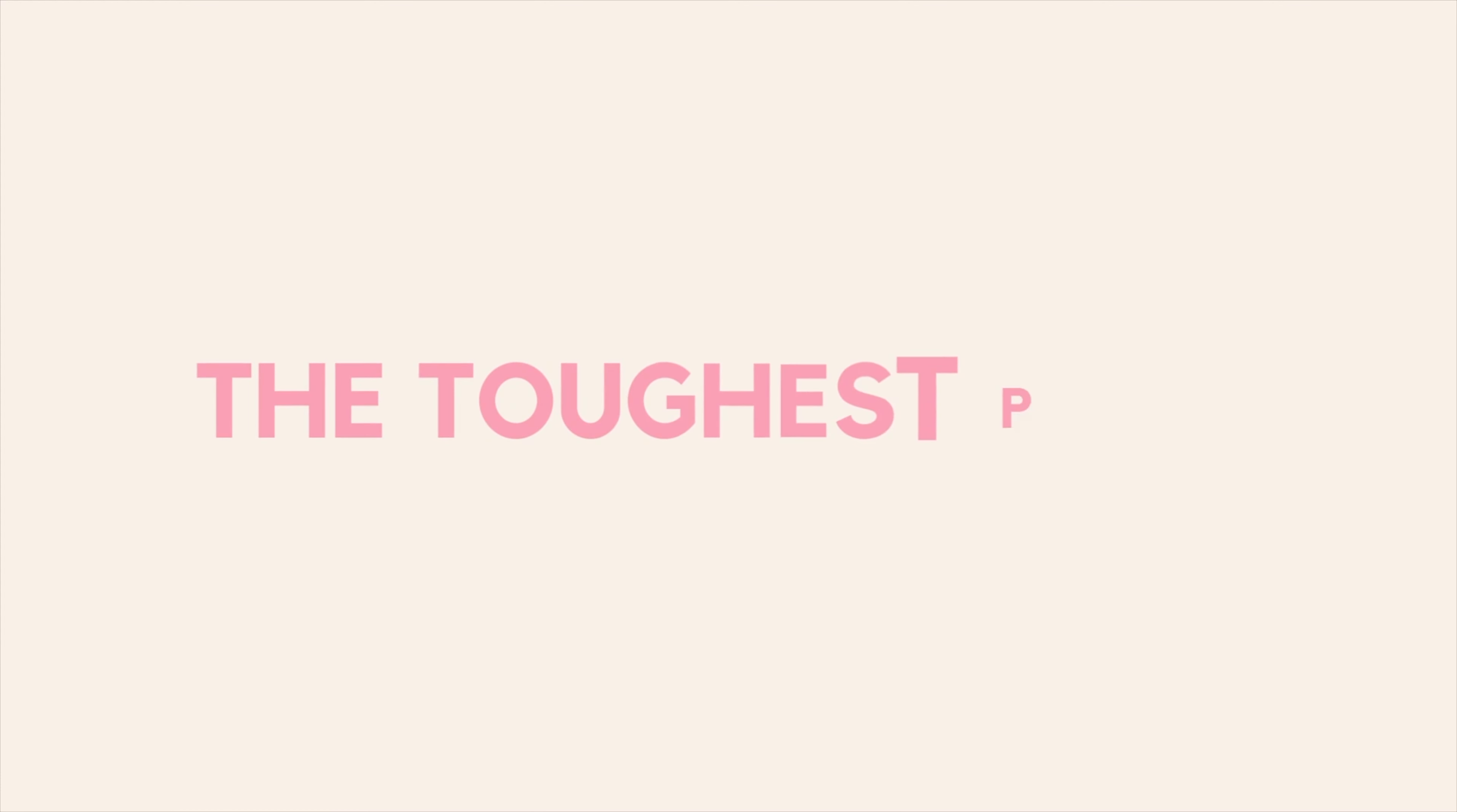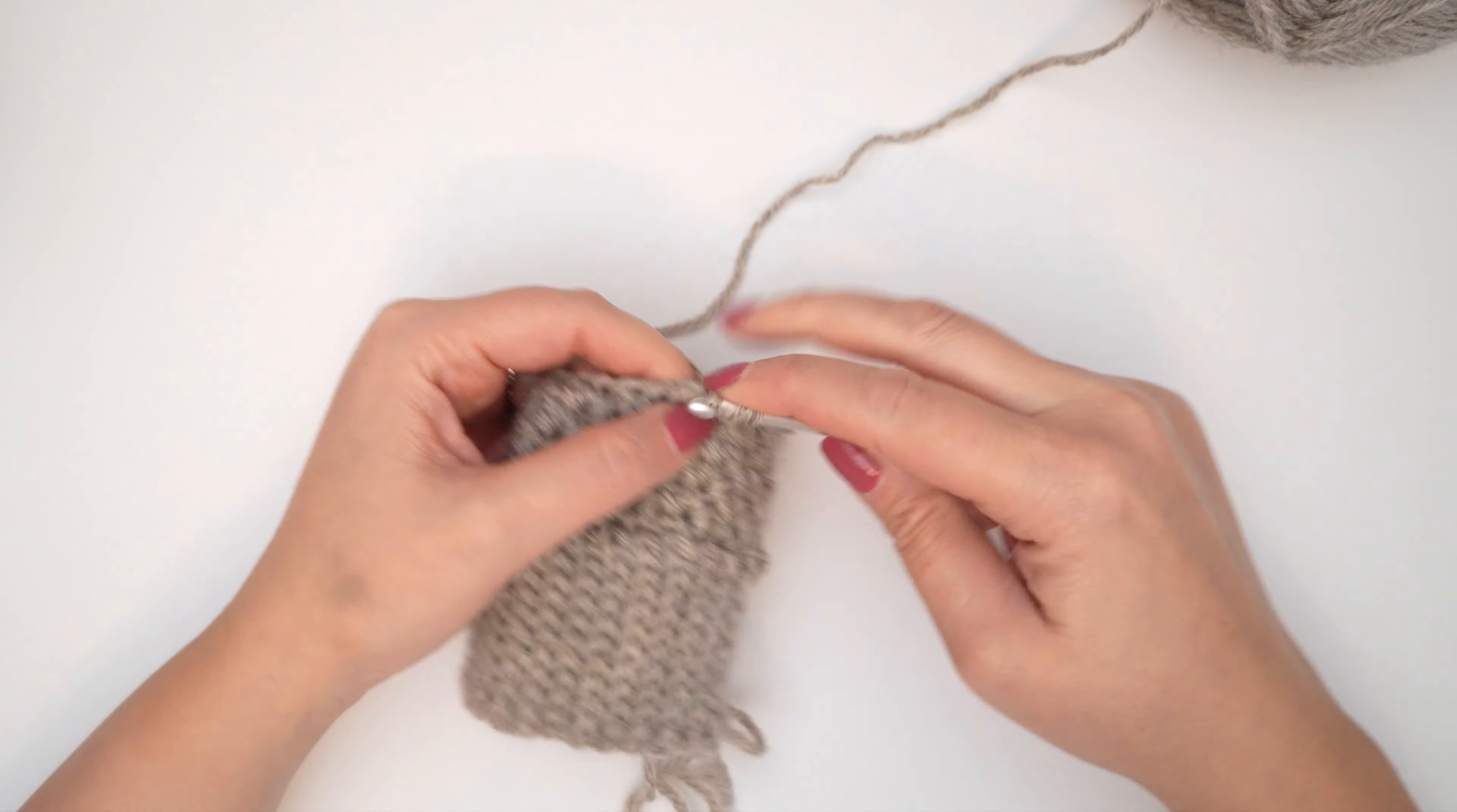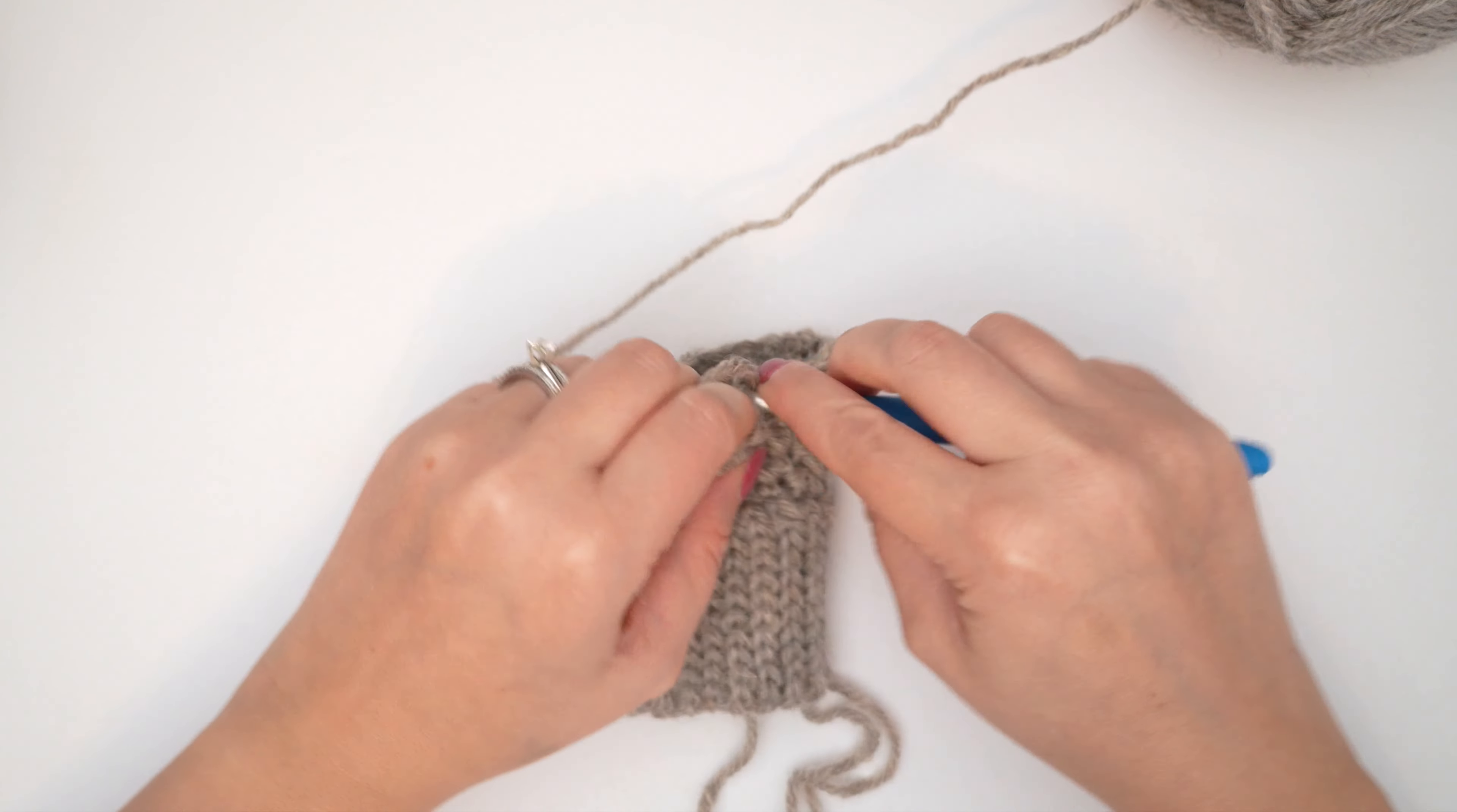Typically, the most challenging parts of learning to crochet are learning to hold and control the yarn and hook, making the foundation chain, and crocheting the first row of a project. Once you get those skills down, it's really smoother sailing. It's all about getting that muscle memory to be able to control your yarn and hook in a consistent way.